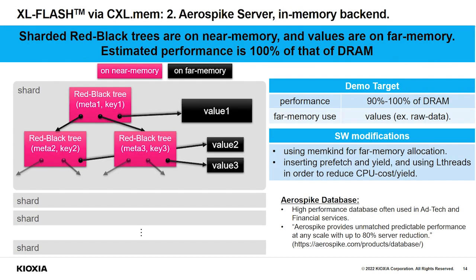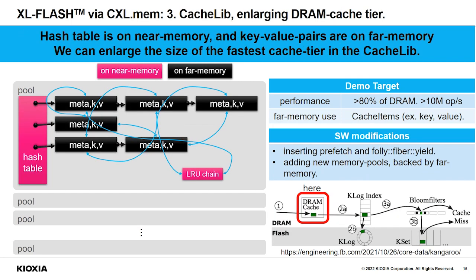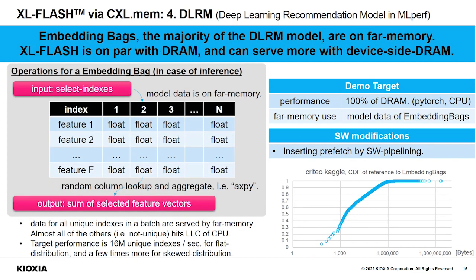For the three other applications, we are trying to hide latency by software prefetching. For Aerospike server, we offload values to XLFlash and prefetch them by software modification. In CacheLib, we keep the hash table in near memory and offload cache items to far memory. In the deep learning recommendation model, the majority of data called the embedding table is offloaded to far memory. Expected performance is 100% of DRAM when using the CPU version of PyTorch. Accesses to the embedding table are often heavily skewed, so we can serve more data with device-side DRAM — good for GPU or accelerator-based implementations.